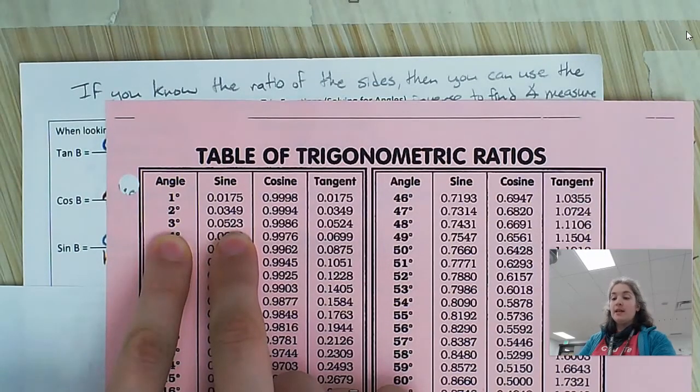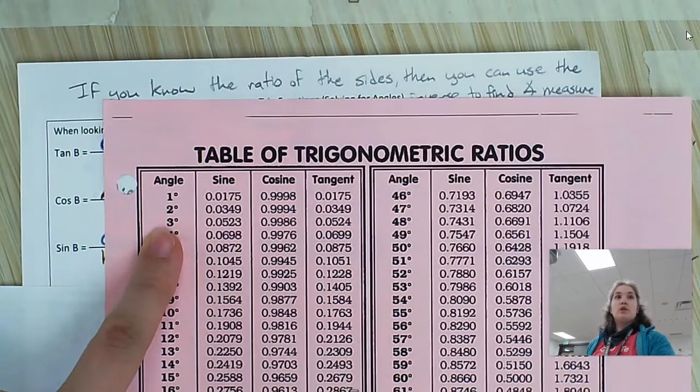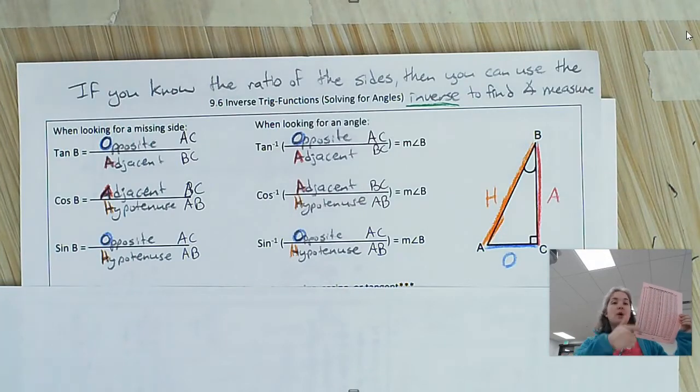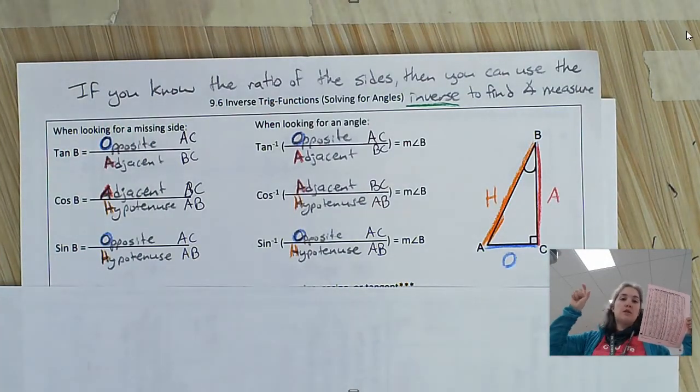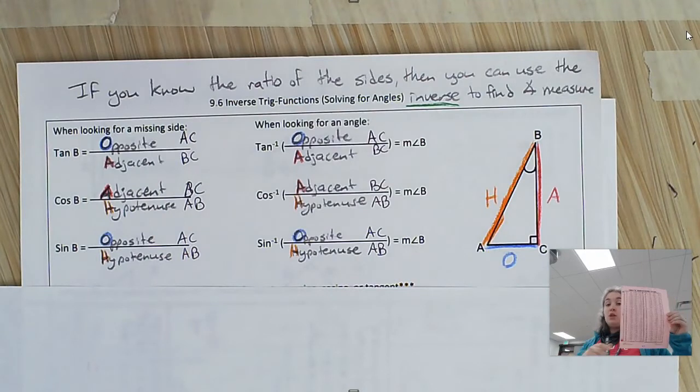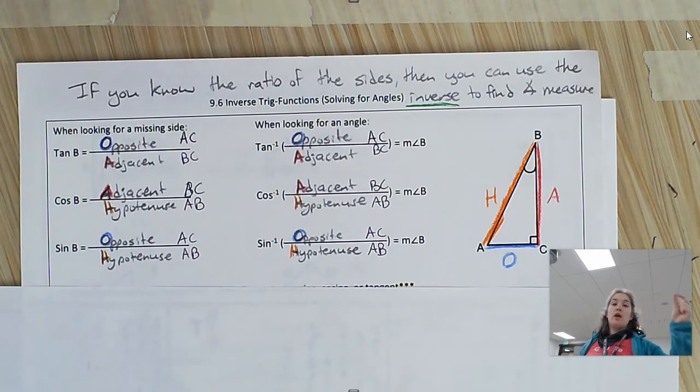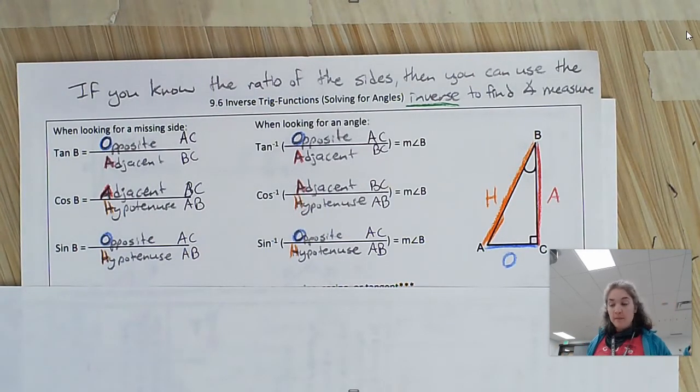The sine for that angle will always be 0.0523, no matter what. That is unique. There is no other sine ratio in this huge big table, which by the way, this thing is huge. We used to have volumes of books on all of these, taking this out to the hundredths of a degree. It's unique. That's the only time sine will ever be 0.0523.